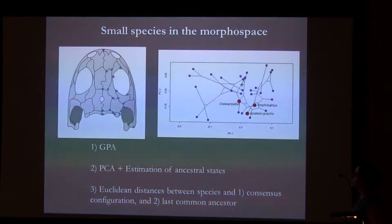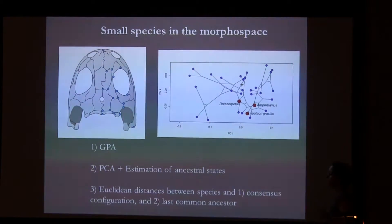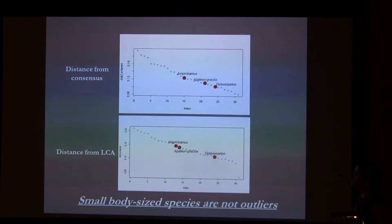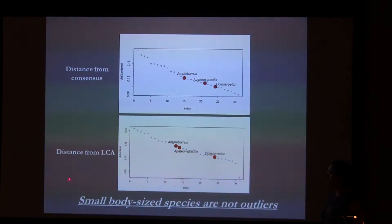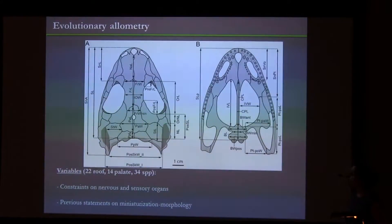I calculated the distances between each of the 34 species to first the average shape of the clade, and also to the shape of the last common ancestor. As you can see in both graphics — here is distance from the consensus, here from the last common ancestor — the three small species are not among those in the more external parts of the morphospace. In other words, small body size species are not outliers with respect to other disorophoids.